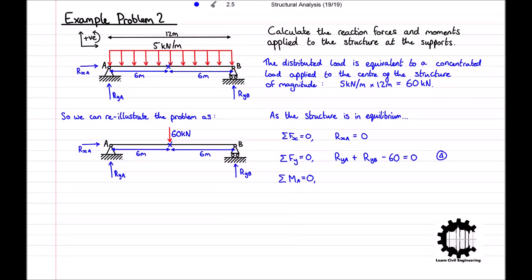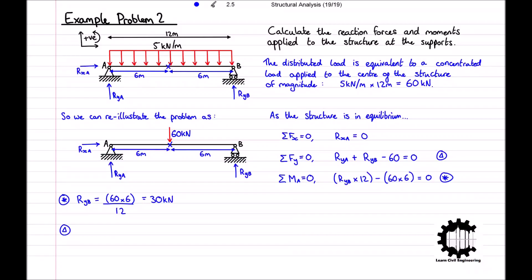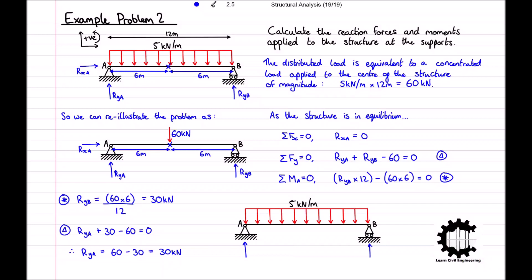Rxa is again equal to zero. Rearranging the moment equation for RYB gives RYB equals 60 times 6 divided by 12, therefore RYB equals 30kN. Substituting into the vertical forces equation gives RYA plus 30 minus 60 equals zero, so RYA equals 30kN. We conclude that there are no horizontal reaction forces, and both reaction forces at point A and point B have a magnitude of 30kN acting upwards.